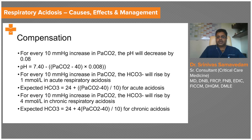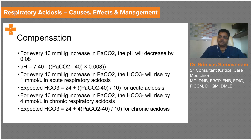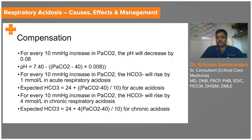If CO2 retention has persisted beyond 48 hours, it becomes chronic. For chronic respiratory acidosis, bicarbonate rises by 4 mmol/L for every 10 mmHg increase in CO2. For example, with a CO2 of 80: (80 minus 40) = 40, divided by 10 is 4, times 4 is 16, plus 24 gives an expected bicarb of 40. If that patient's actual bicarb is only 30 — above normal but below the expected compensation — this indicates a concurrent metabolic acidosis.